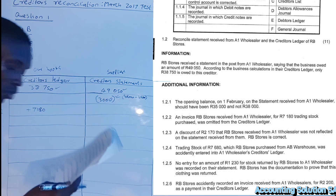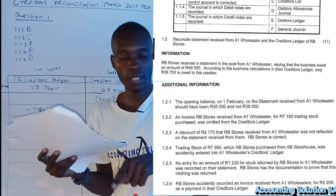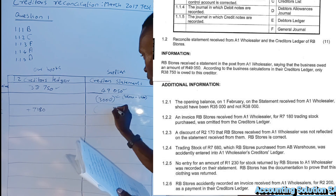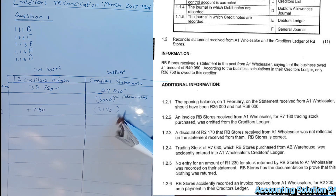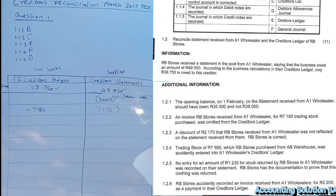Transaction 3: A discount of R2,170 that RB Store received from A1 Wholesaler was not reflected on the statement received from them. RB Store's side is correct — it has already been recorded in our books. A discount reduces the liability we have to pay, so we subtract R2,170 on the supplier's statement side. We don't need to touch our side because it was already correctly recorded.